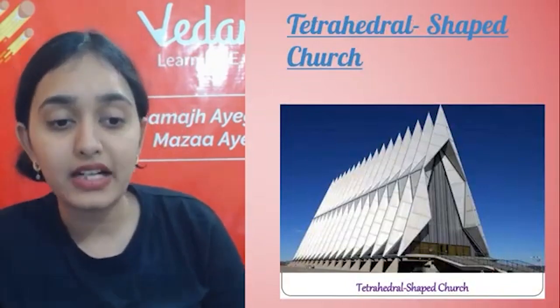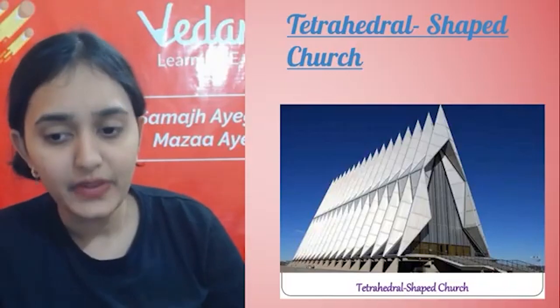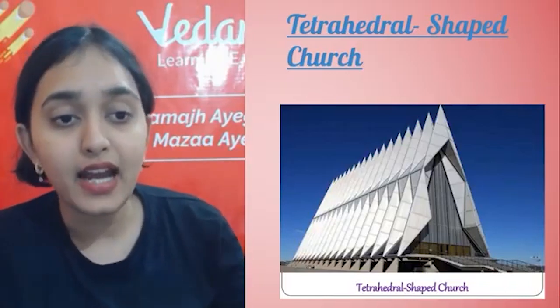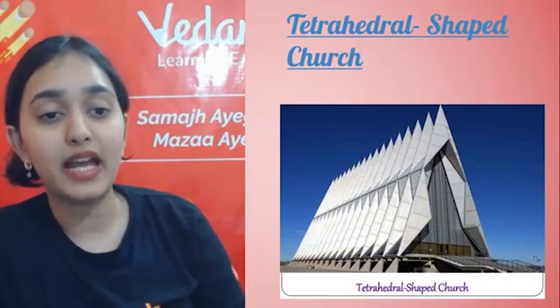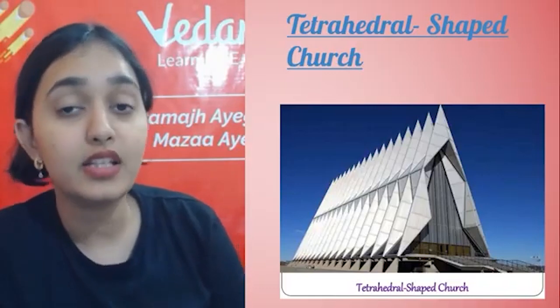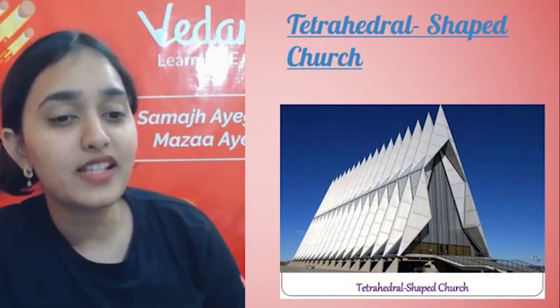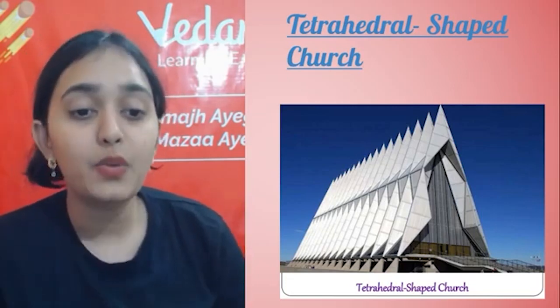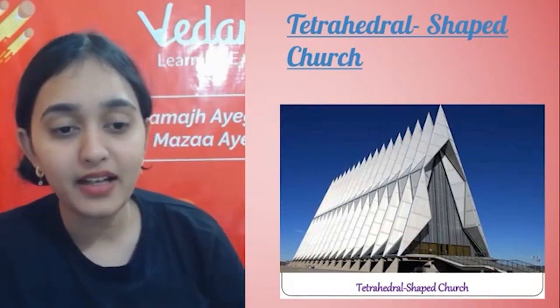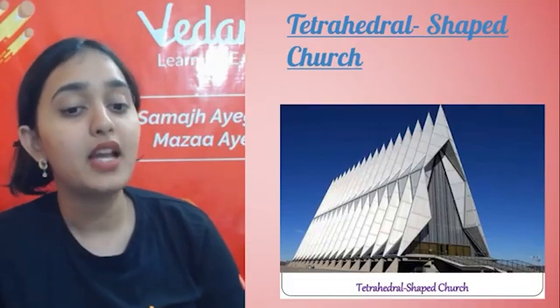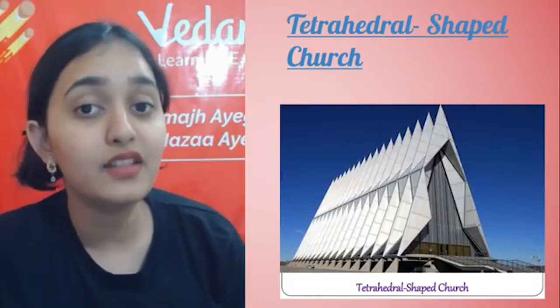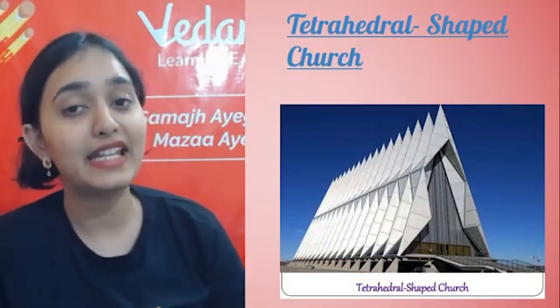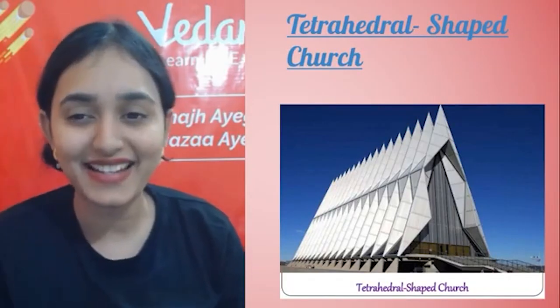Similarly, there is the Tetrahedron-shaped Church, which is entirely made from tetrahedron shapes — a convex polyhedron with triangular faces. It was built using the geometry of math, and has a row of 17 spires in a massive tetrahedron frame that stretches more than 150 feet into the sky. Amazing, right?